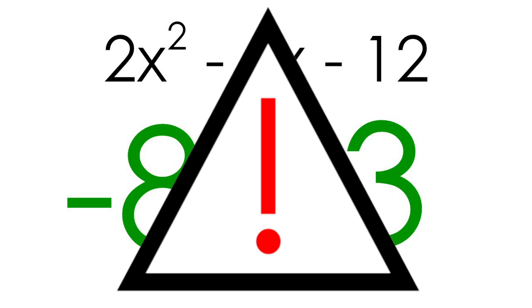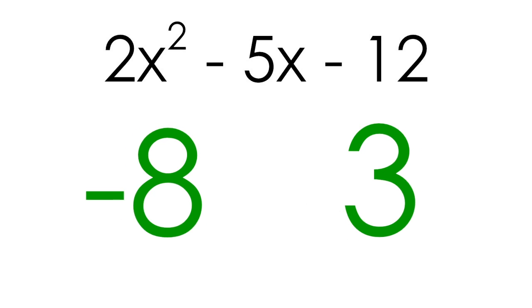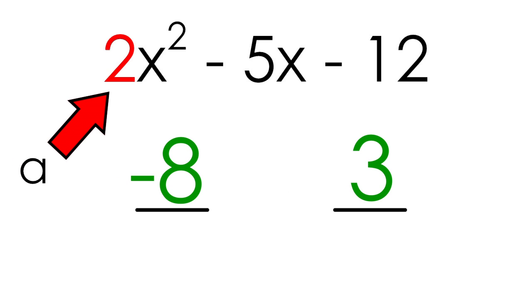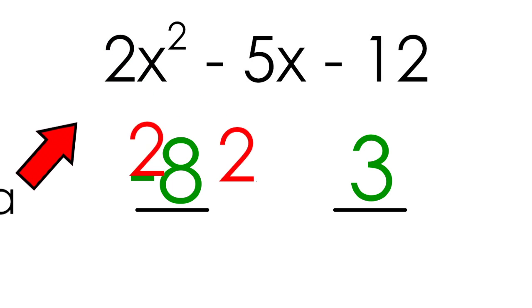So we're going to start by taking our two numbers, negative 8 and 3, and we're going to divide them by the a value of our original trinomial, in this case, 2.